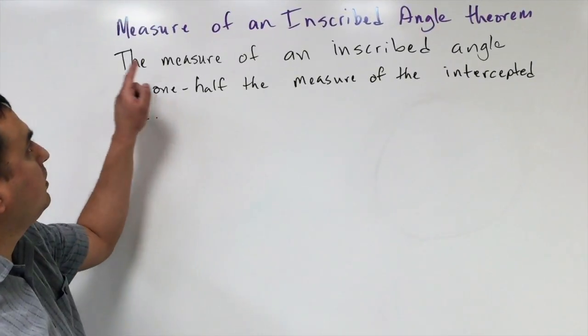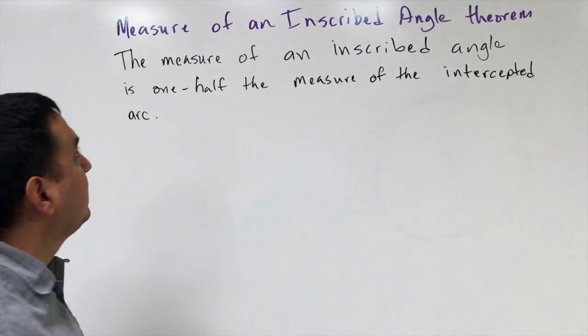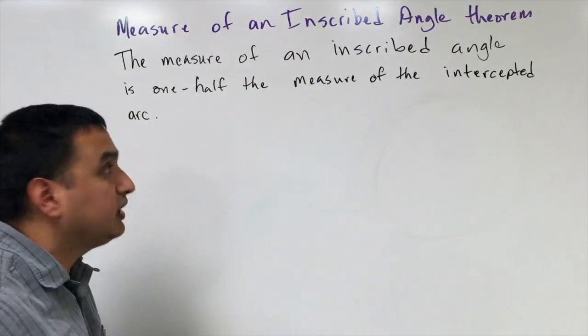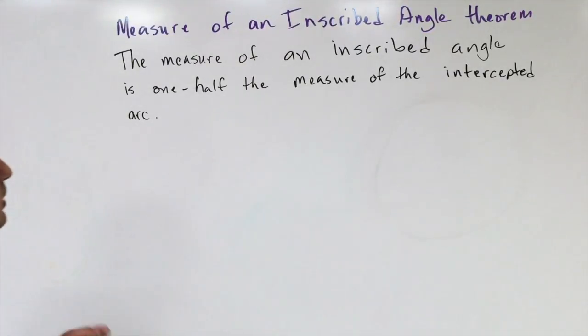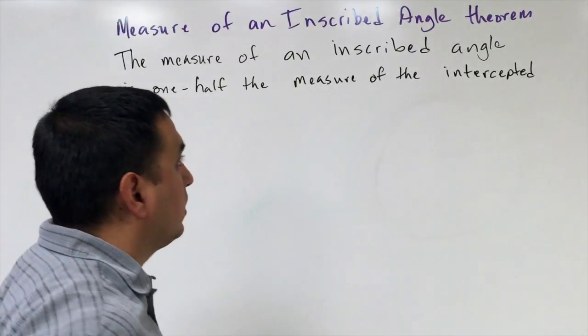This first theorem is called the Inscribed Angle Theorem. It simply says that the measure of an inscribed angle is one half the measure of the intercepted arc.